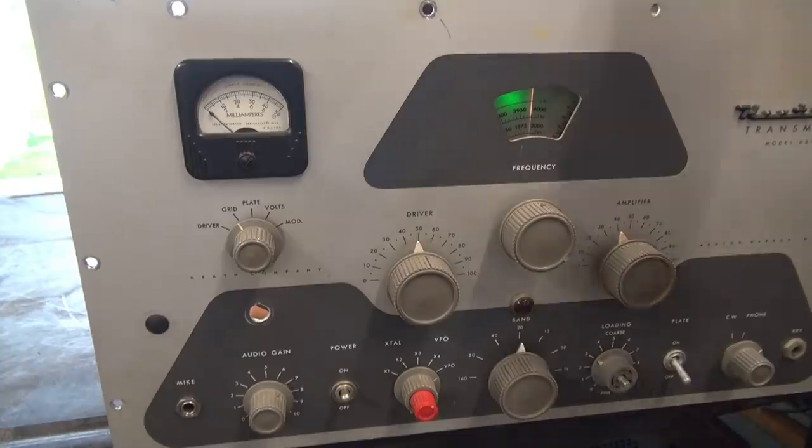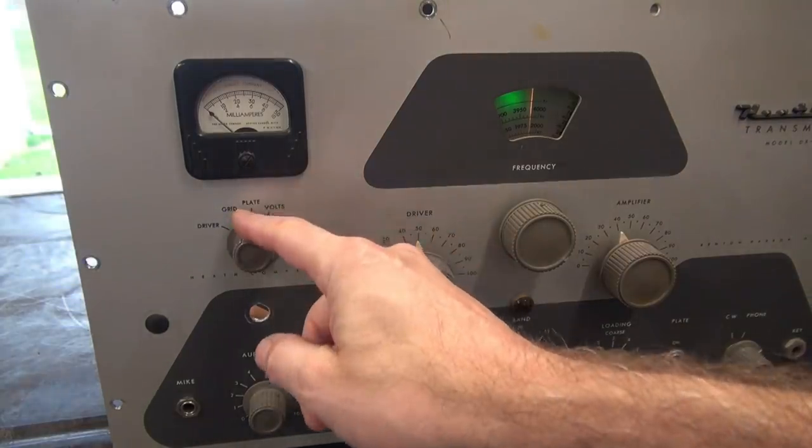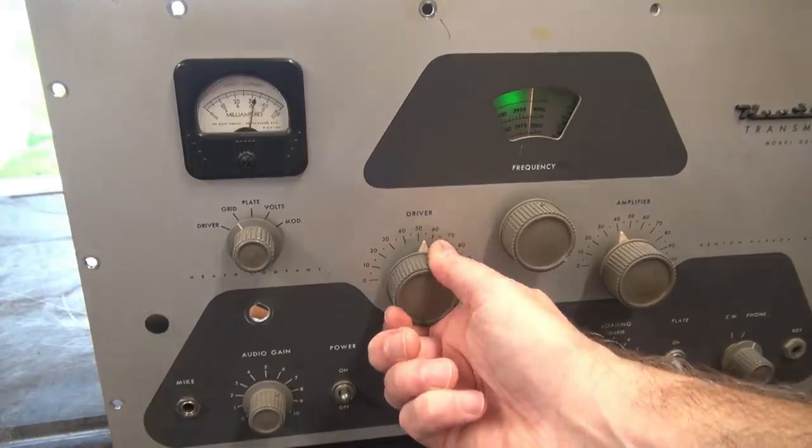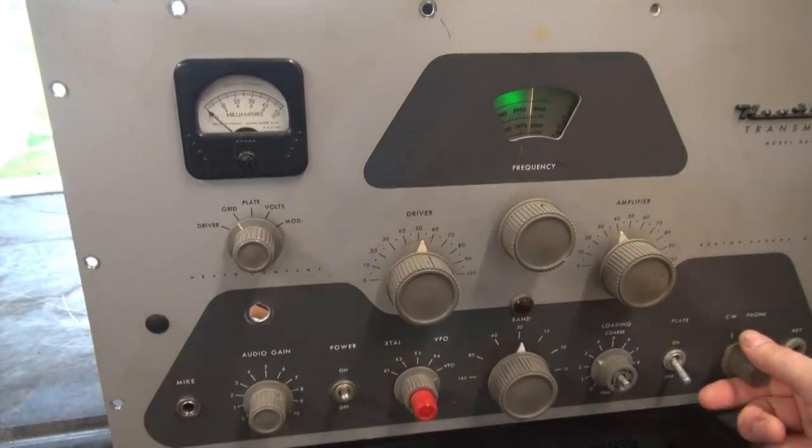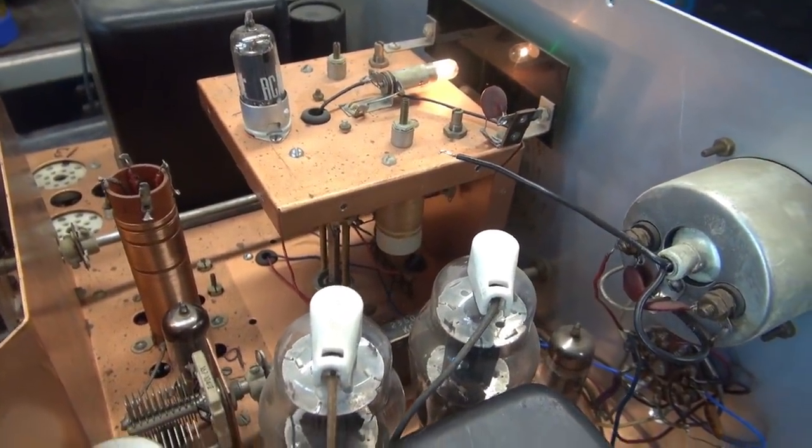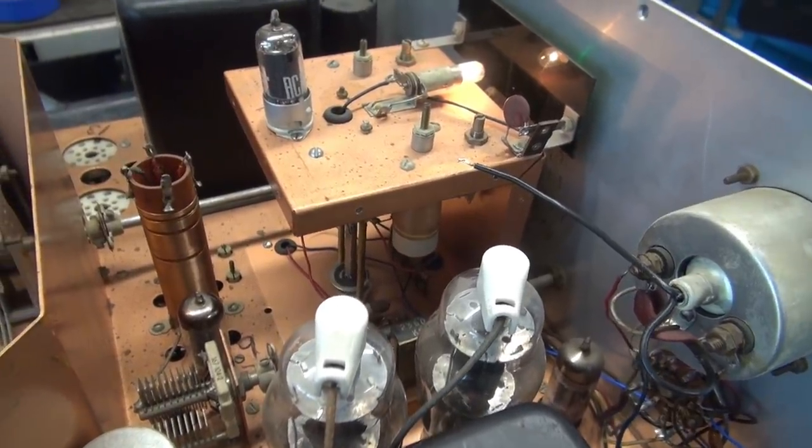Fire it up here. Got the VFO tube back in. We're in VFO position. And now we're looking for grid drive. I'm going to put it into CW. There it is. Should be able to vary it. Yep. We have grid drive back. Alright, now I need to get that VFO shield reinstalled and adjust the cam underneath that selects the different bands in the VFO.